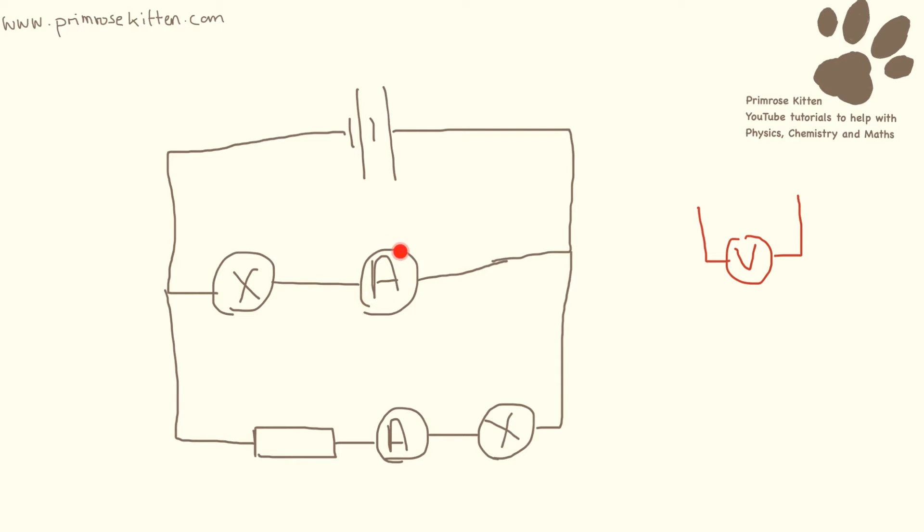Now this is a symbol here for an ammeter, this is also an ammeter. For an ammeter to work it needs to be in line or in series with the other components. So this ammeter here is going to be taking readings relevant to this component, and this ammeter here is going to be taking readings relative to these components here. This ammeter doesn't have anything to do with this lamp over here.